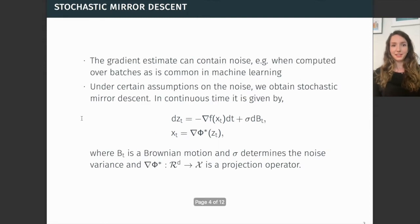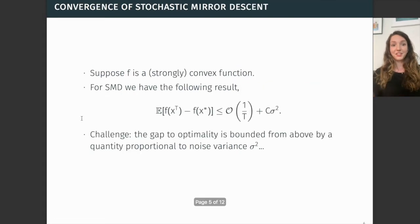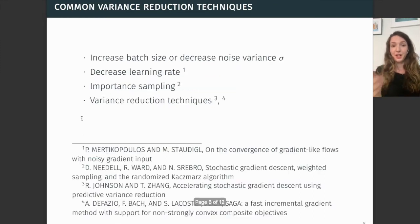Now if our gradient estimate contains noise, as is common if it's computed over a batch of the data, then we have stochastic mirror descent with additionally a noise term sigma times Brownian motion. The challenge here is that stochastic mirror descent is only able to converge to an area of the optimum x-star, and the size of this area is proportional to the noise variance.